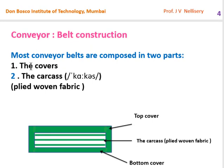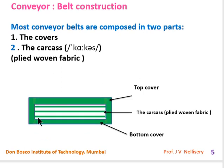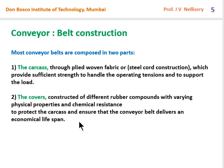The belt consists of two parts: the cover and the body. The body is known as the carcass, which is a plied woven fabric. As you look at the figure, the top part is called the top cover and the lower part is called the bottom cover — the whole covering is made of rubber. Within this lies the body, known as the carcass.